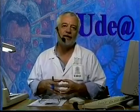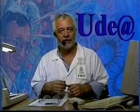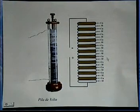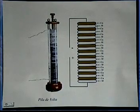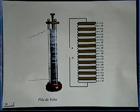Uno de los pasos más importantes en el estudio de la electricidad fue cuando se pudo disponer de una conducción eléctrica controlada mediante el descubrimiento que hizo Volta. Volta encontró que cuando se ponen en contacto diferentes metales se producen desplazamientos de cargas eléctricas.